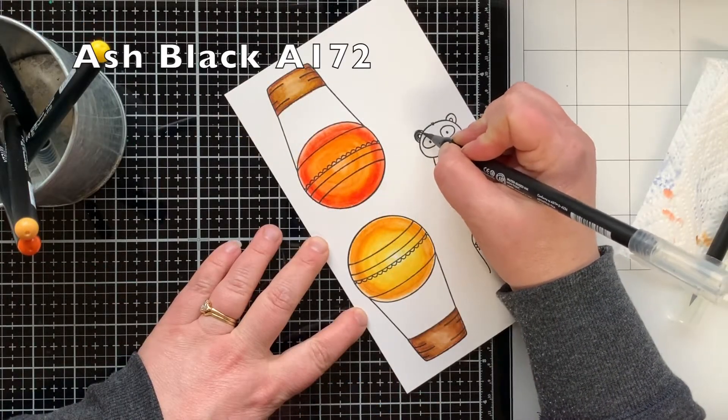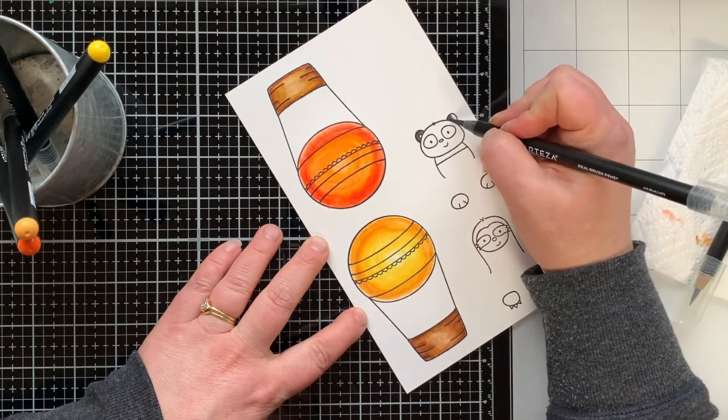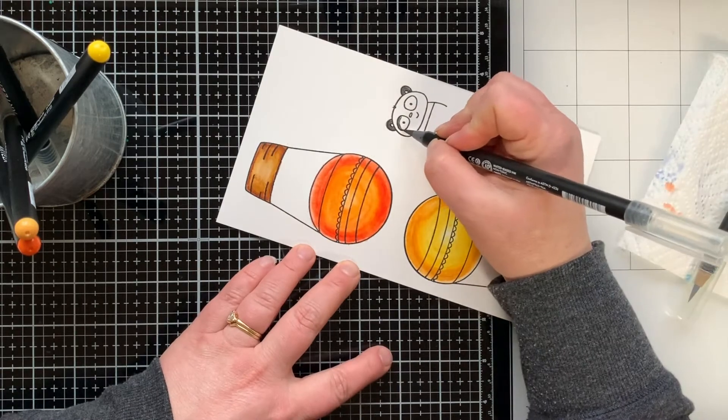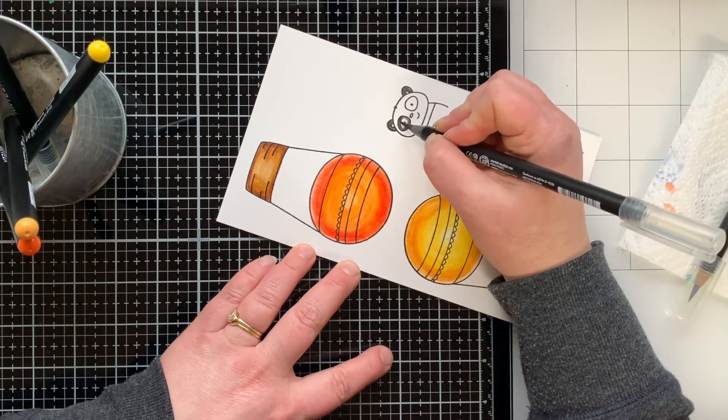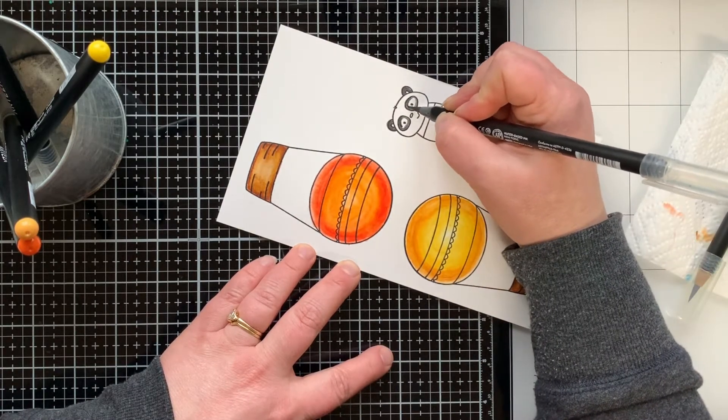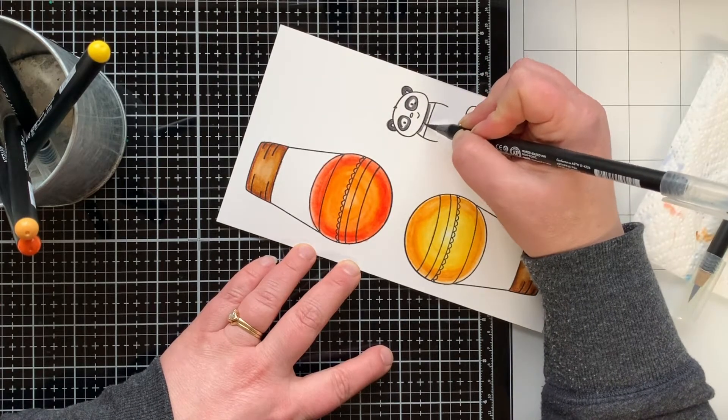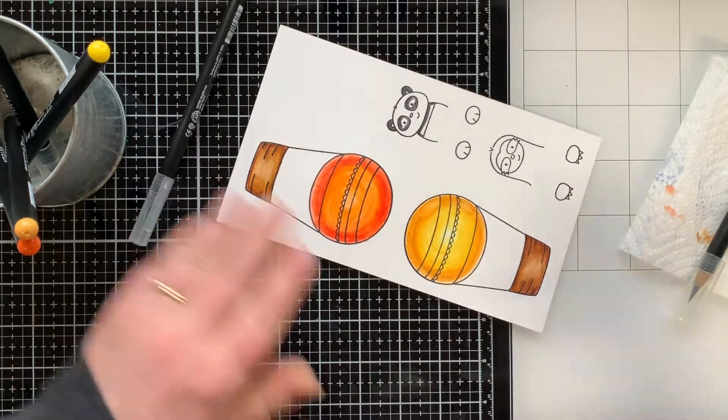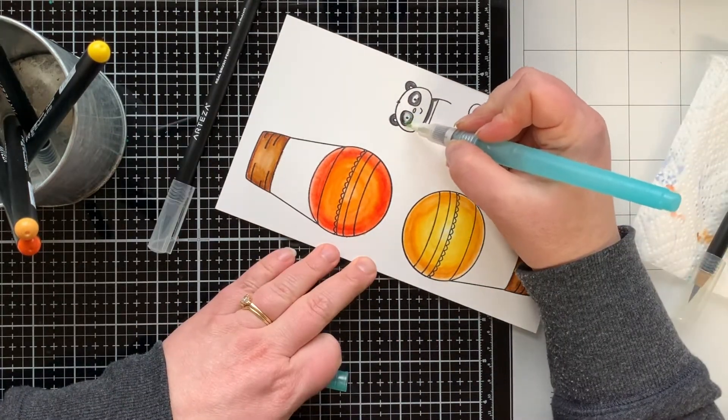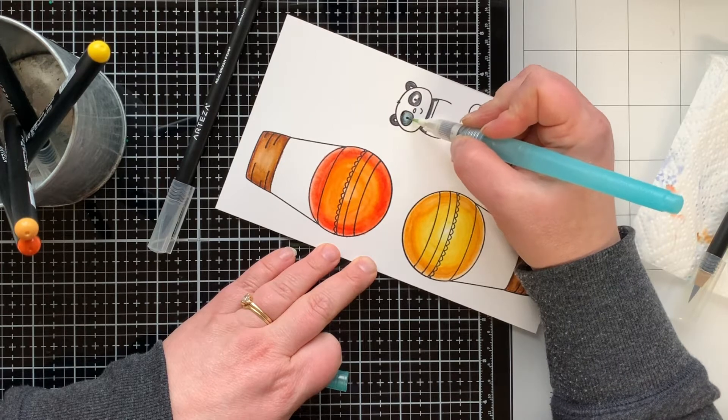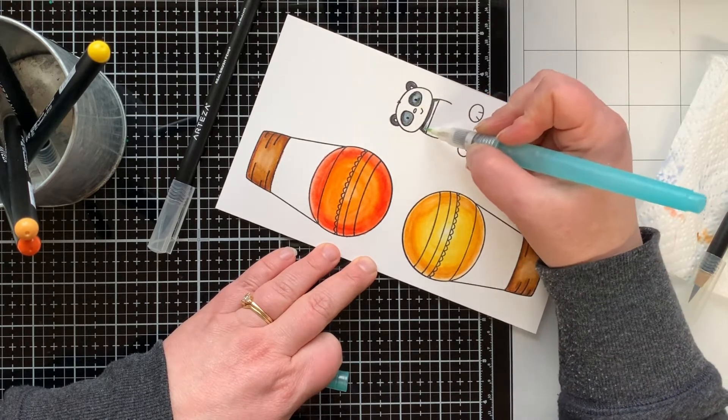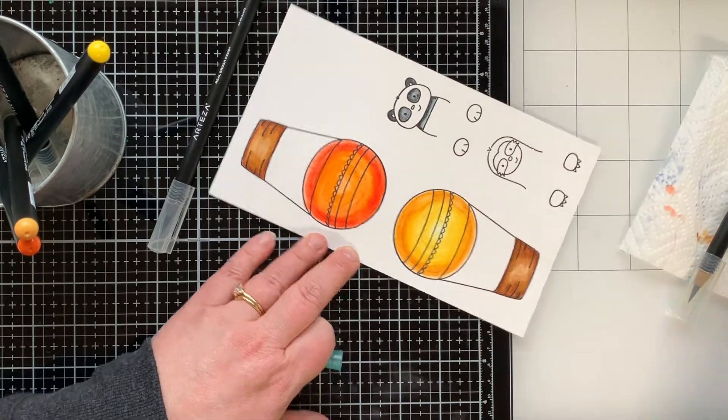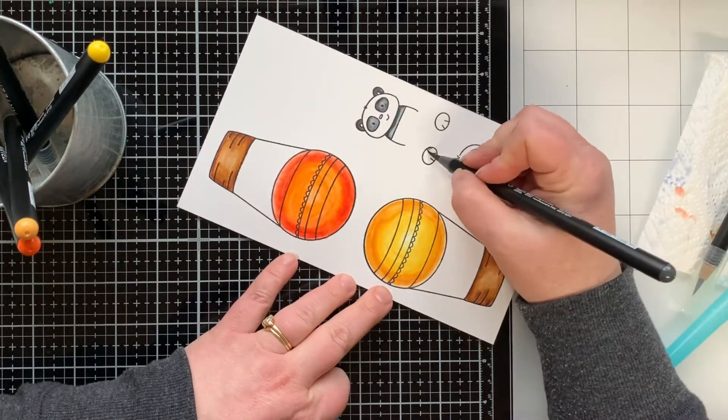Then the basket done the exact same way with the same two brown markers. Now for my panda I'm using a very dark gray called ash black. If I used straight up black it would lose some of the detail on this image like his eyeballs, so a dark dark gray is going to work really good on this little guy. I'm just outlining the eyes and that one portion under his chin and then blending that out with my water brush. It still in the end gives the feel of it being a panda.